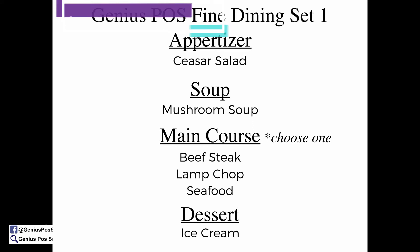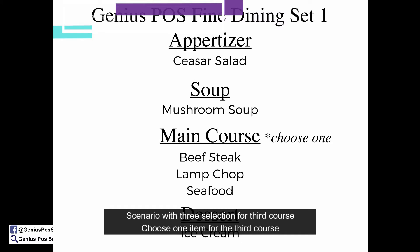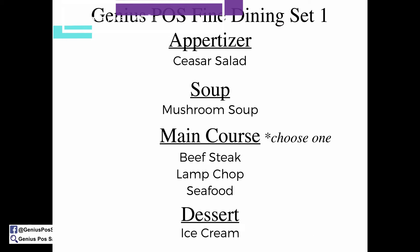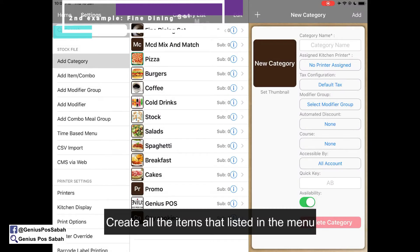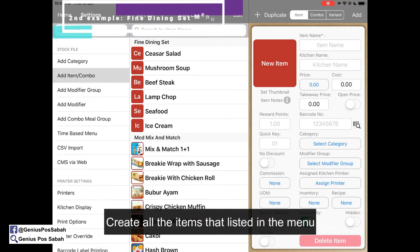Second scenario: the Genius Post Fine Dining Set 1. This set includes an appetizer, a soup, a main course with 3 options — choose 1 from beef steak, lamb chop, or seafood — and then a dessert, which is ice cream. We create all the items first, add the category, and create all the items.